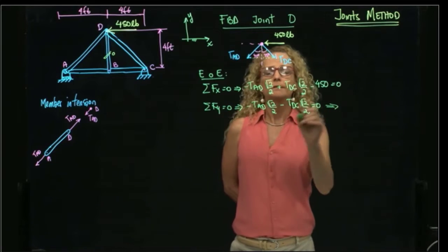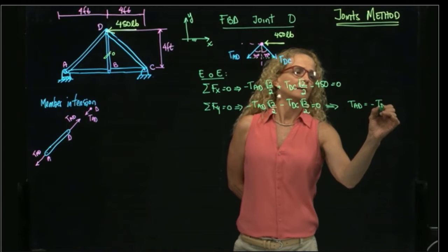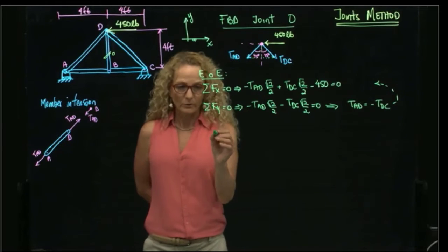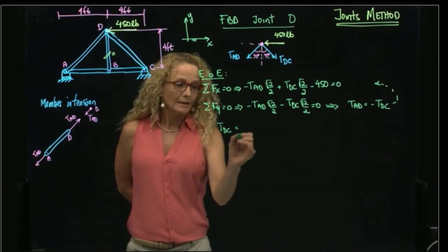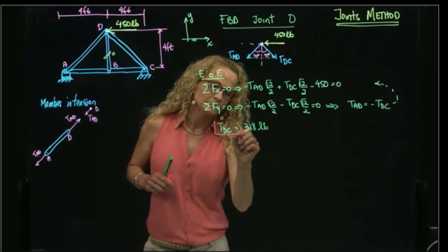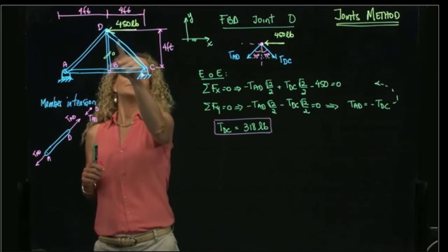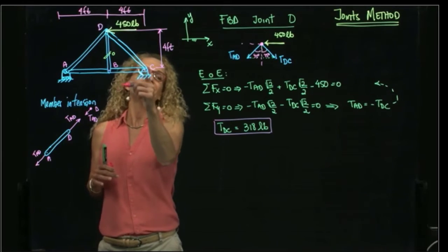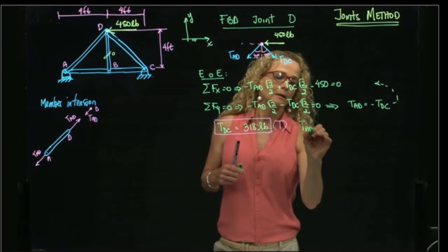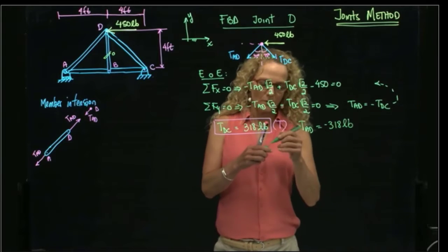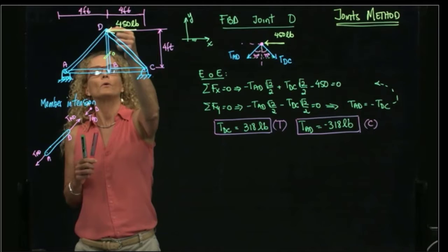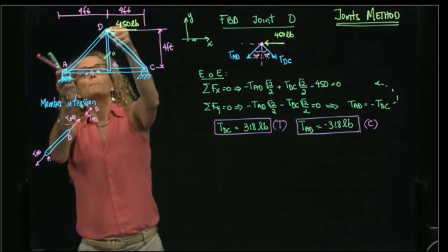From here, we see that TAD equals negative TDC. And I plug that into here, and I can solve for both. And that gives me a value of TDC equals to 318 pounds, and it's positive. Since it's positive, it means that this bar, or this link, or this member, is in tension. And we found that TAD is the negative value of that one. Therefore, since it's negative, it's in compression. It means that this force is pulling this bar and it's compressing this bar over here.